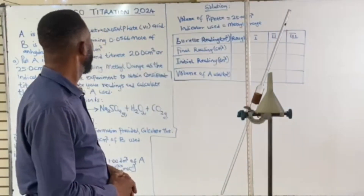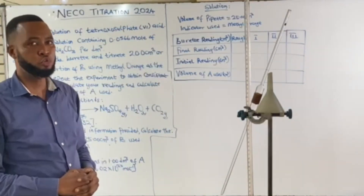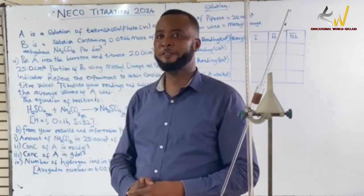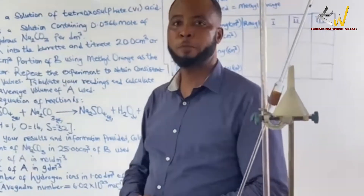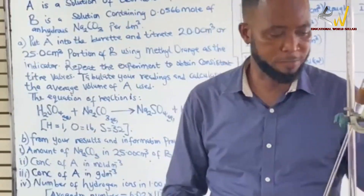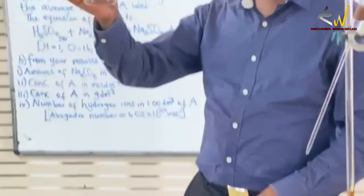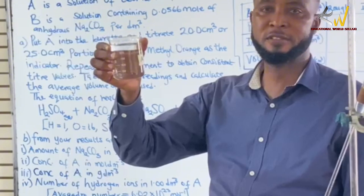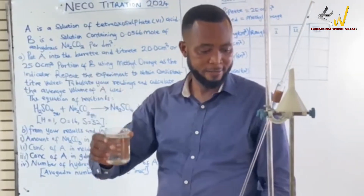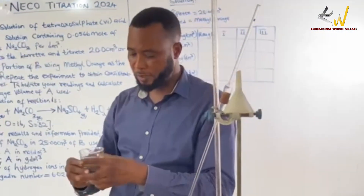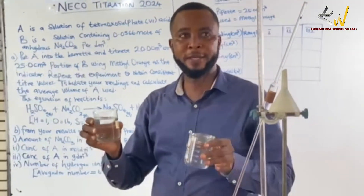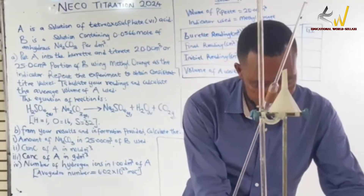Today we are going to learn about this titration experiment. We have our solution gotten from tetraoxosulfate(VI) acid and our solution B is sodium carbonate. With me here is a solution which is actually 3.80 cm³ — this solution is made from six grams of sodium carbonate dissolved in distilled water.